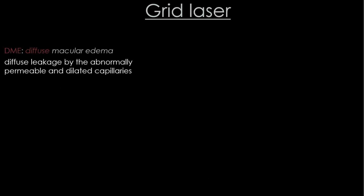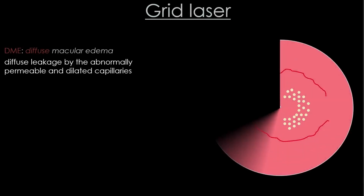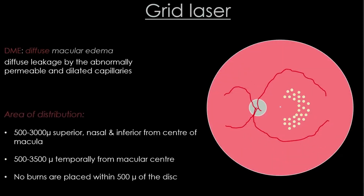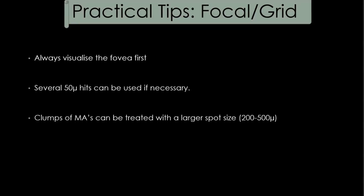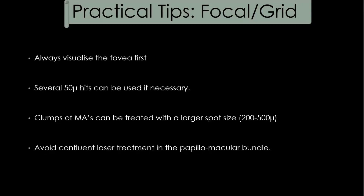Grid laser is done for diffuse diabetic macular edema, where leakage is from dilated capillaries and not microaneurysms. The pattern is C-shaped, extending 3000 to 3500 microns from the center of the macula, with no burns placed within 500 microns of the disc or fovea. For any macular laser, it is important to localize the fovea first. For clumps of microaneurysms, use multiple 50-micron hits or a larger spot size. Treatment over the papillomacular bundle should be very minimal and non-confluent, and avoid lasering over flame-shaped hemorrhages.